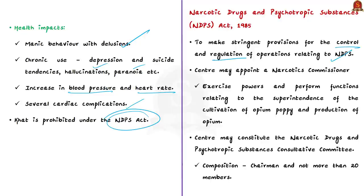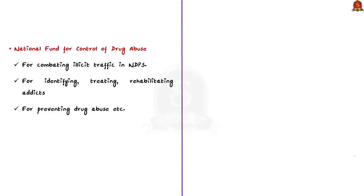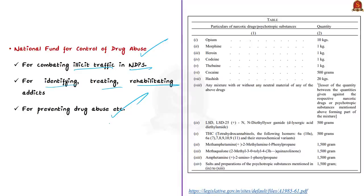Cut leaves are prohibited under the NDPS Act of 1985 because they contain cathinone and cathine — psychotropic substances prohibited under this act. The NDPS Act consolidates and amends laws relating to narcotic drugs and makes stringent provisions for control and regulation of operations relating to narcotic drugs and psychotropic substances. Under the act, the center may appoint a Narcotics Commissioner and may constitute Narcotics Drugs and Psychotropic Substances Consultative Committees of a chairman and not more than 20 members. It also provides for a National Fund for Control of Drug Abuse. Other substances banned under NDPS include opium, morphine, heroin, hashish, cocaine, and LSD.